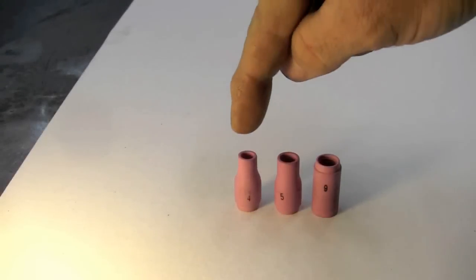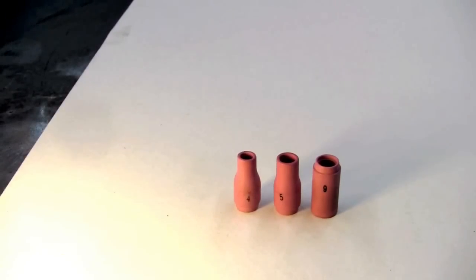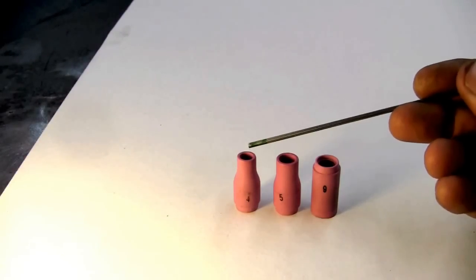So now we have the shielding cups. We have a four, five, and six. Now how do you know what to select for which one? Well, with your 1/16th tungsten, you're going to select probably a four or a five. What this is going to do, it's going to keep the shielding gas tighter around the smaller tungsten and give you more shielding.